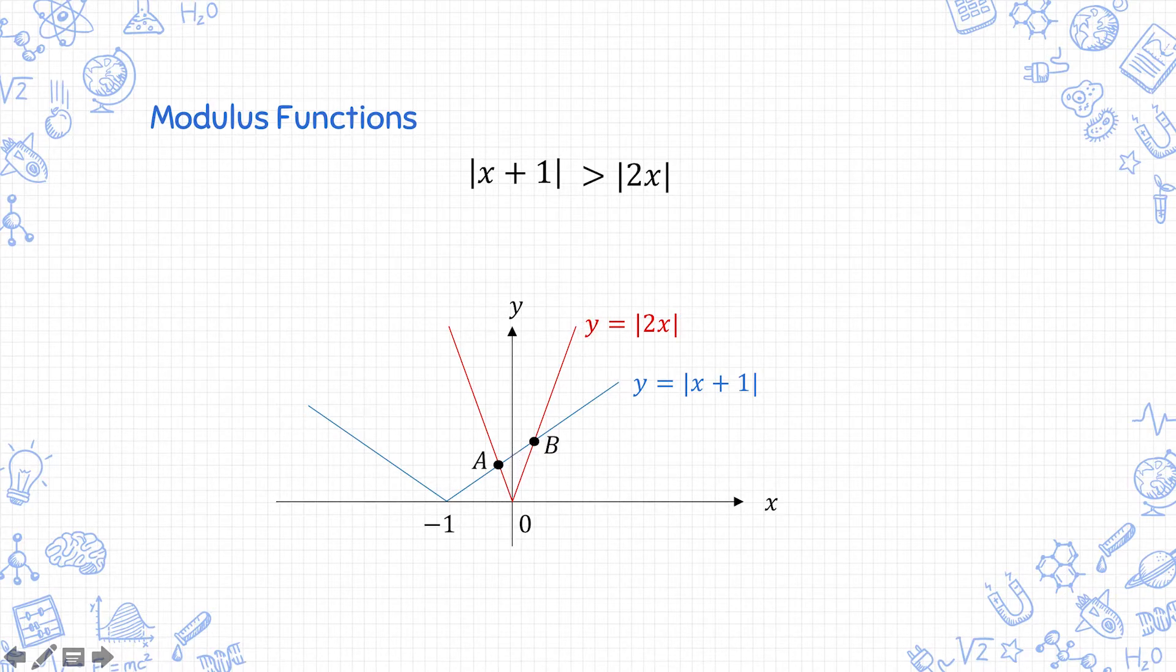If you look at the diagram, it's the part in between a and b. So what you need to do is find the value of x at a and the value of x at b and the solution is that x is in between these two values.